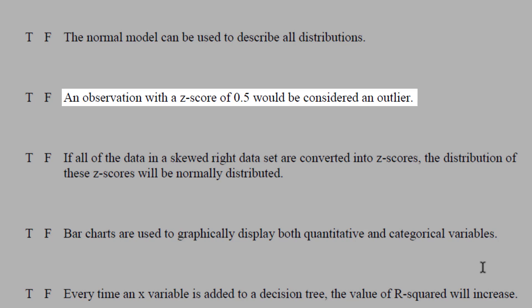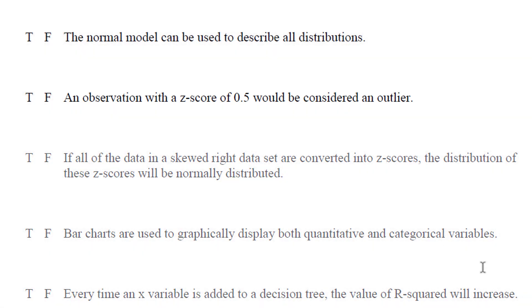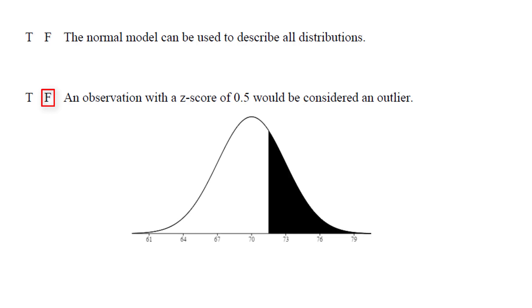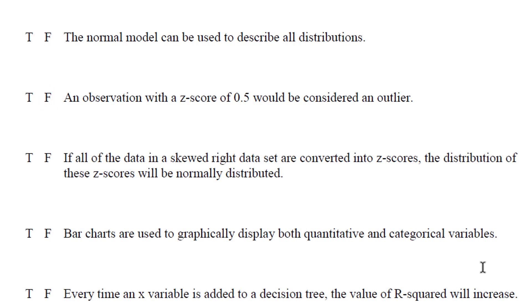Next, an observation with a z-score of 0.5 would be considered an outlier. This is definitely false. 0.5 is only 0.5 standard deviations above the mean, which is very close. This would be a guy, if guys are on average 5'10" with a standard deviation of 3 inches, this would be a guy who is 5'11.5", because that's a half a standard deviation. That's a very small amount to be above the mean, and you're very close. So that would not be an outlier.